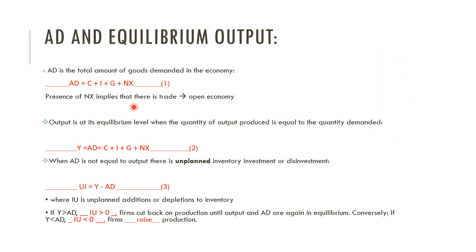We are now going to look at the various components of aggregate demand. Aggregate demand in the economy consists of consumption expenditure, plus investment spending, plus government spending, plus net exports. These are simply exports minus imports. We subtract imports because they represent demand or spending on foreign goods.